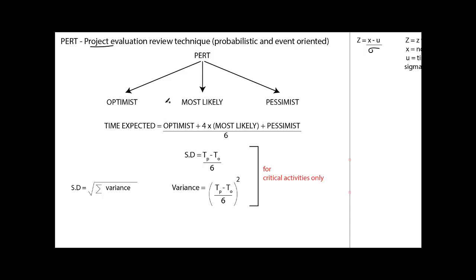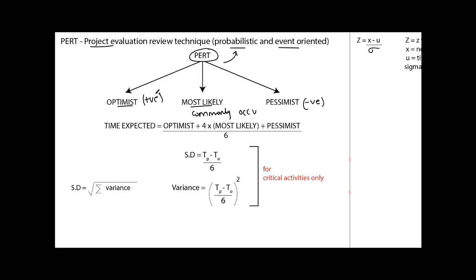Let's start with PERT, which stands for Project Evaluation Review Technique. PERT is a probabilistic and event-oriented model, while CPM is deterministic and activity-oriented. PERT depends on three time estimates: optimistic time (the positive/best-case time), most likely time (the commonly occurring time), and pessimistic time (the negative/worst-case time). The expected time formula is TE = (optimistic + 4 × most likely + pessimistic) / 6.